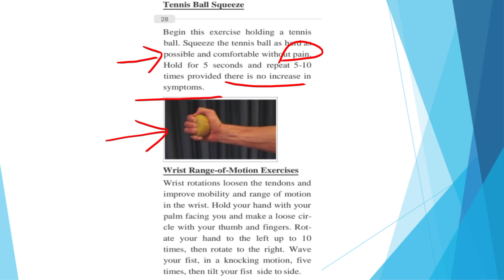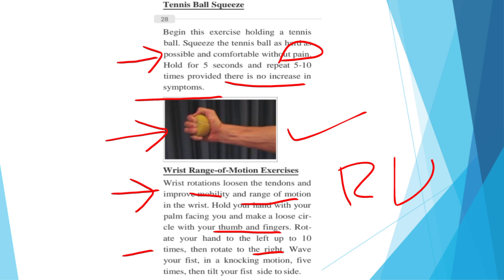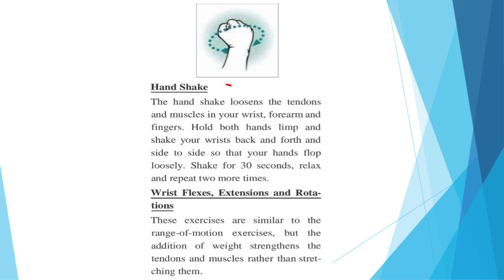Wrist range of motion exercises: wrist rotation loosens the tendons and improves mobility and range of motion. Hold your hand with the palm facing up, making a circle with your thumb and finger. Rotate your hand to the left up to 10 times, then rotate to the right — performing all wrist range of motion directions. Wave your fist in a knocking motion 5 times, then tilt your fist side to side. This is for wrist range of motion.